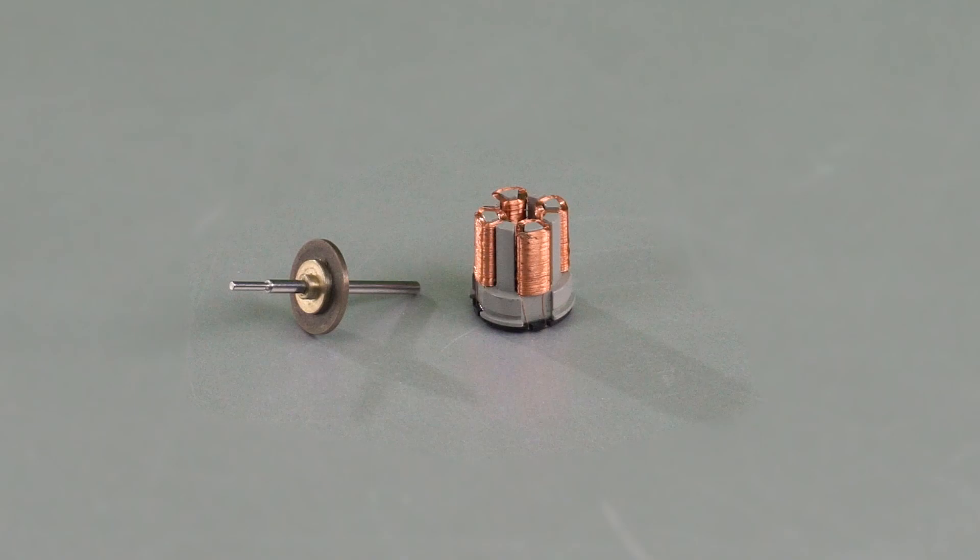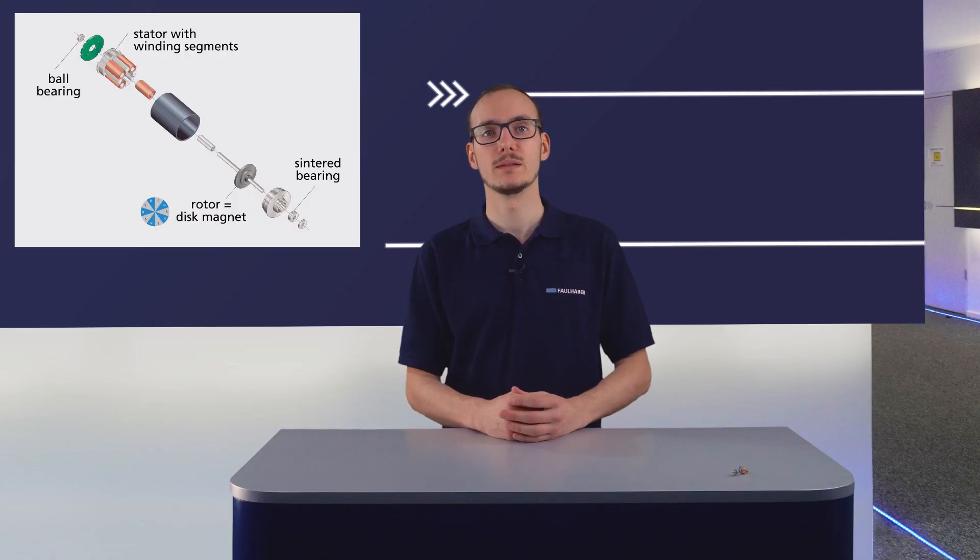This is why for these motors, the backside bearing always has to be a ball bearing. Only the front bearing can be replaced by a sintered bearing if desired. We also see that the rotor has a disc magnet, which is magnetized with alternative segments.